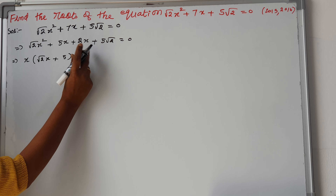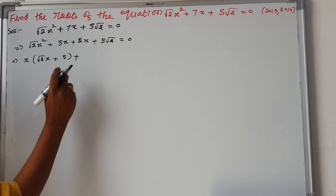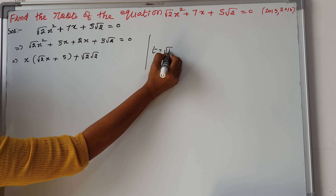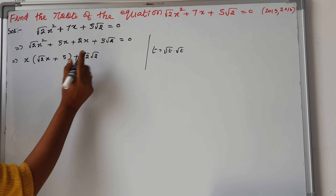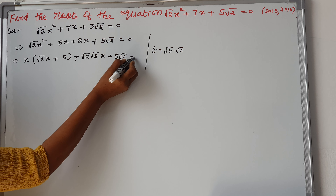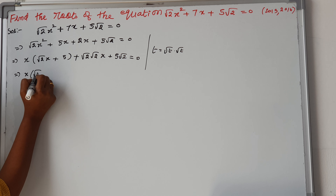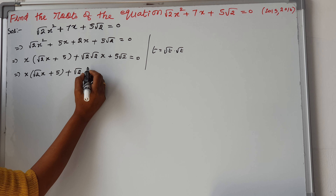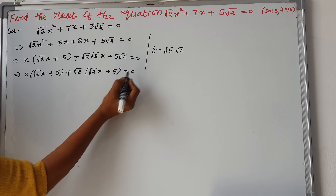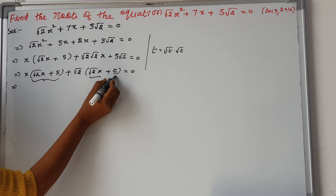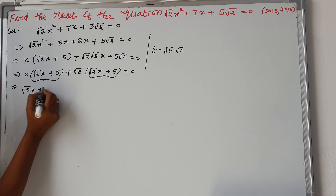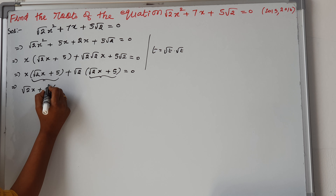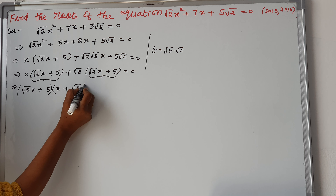Note that 5 root 2 is equal to root 2 into root 2 into 5, which helps with factoring. Grouping the terms: x into (root 2 x plus 5) plus root 2 into (root 2 x plus 5) is equal to 0.